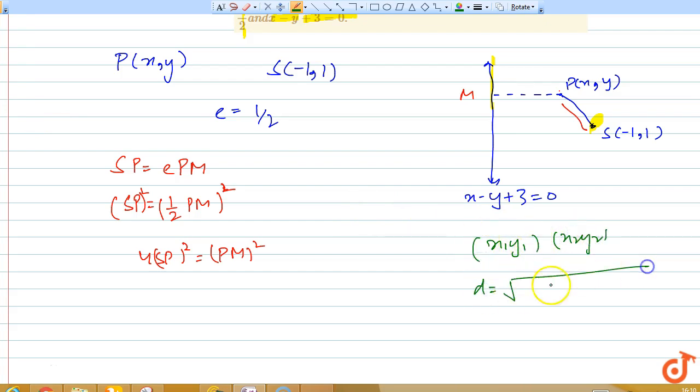The formula is √[(x₂ - x₁)² + (y₂ - y₁)²]. So applying this here we would have 4 × [√((-1 - x)² + (1 - y)²)]².